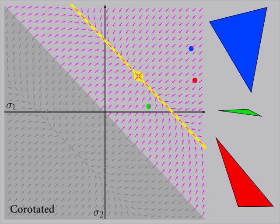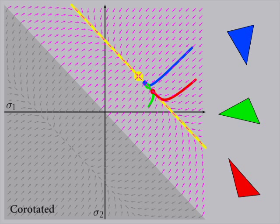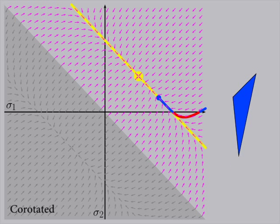This is the same setup, but with the co-rotated constitutive model. Unlike our model, the primary contour here crosses the axes into the inverted region. The presence of the co-rotated primary contour in the inverted region will cause some un-inverted configurations to invert as they relax.